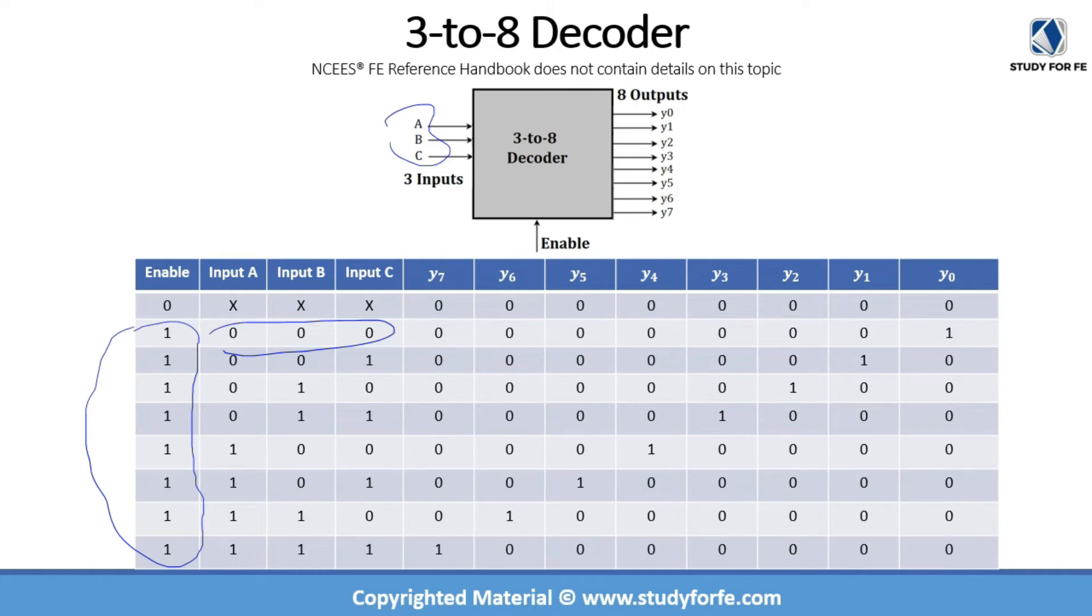So when we input 0,0,0, that corresponds to 0 in decimal and that will basically activate y0. When we select 0,0,1, that is equal to 1, so that will activate y1. And similarly, 0,1,0 corresponds to a 2, that will activate y2, and so on and so forth. So you can go through all of these combinations and you can see that by selecting different values on the input, it will correspond to different values on the output. So the basic function is still the same. Whether you're looking at a 2 to 4 decoder, a 3 to 8 decoder, or a 4 to 16 decoder, and so on, by selecting unique values on the input, you're able to get unique values on the output.